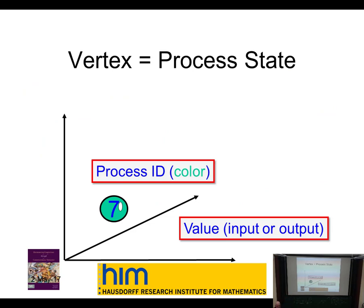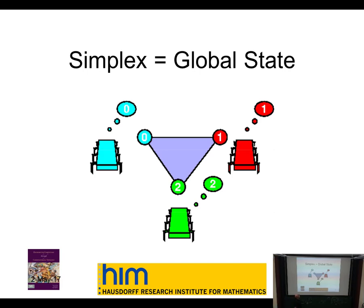The combinatorial language we're going to use: I'll represent a process state as a vertex, which you can think of as part of an abstract simplex or something that lives in a sufficiently high-dimensional Euclidean space. I'll use color to represent the ID — the name — of the process, and label it with a state, which will mostly be integers. So the green process has value 7. A collection of compatible states — states that could all be held simultaneously — gets linked into a simplex, representing a global state of a system of three processes.